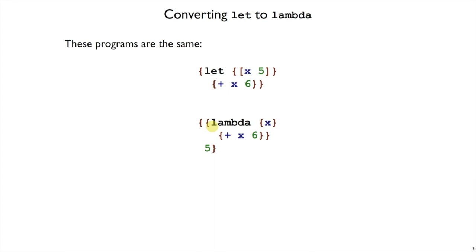Here I've got a function that takes an x and adds x to 6, and I'm immediately calling that function with the argument 5. So 5 goes in for x and x plus 6, that'll be 11, the same as this let form.